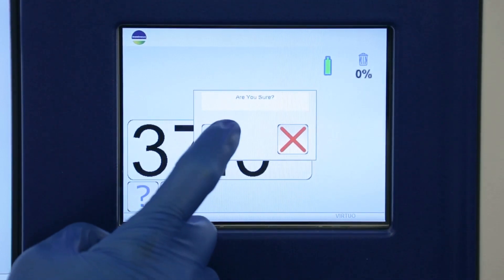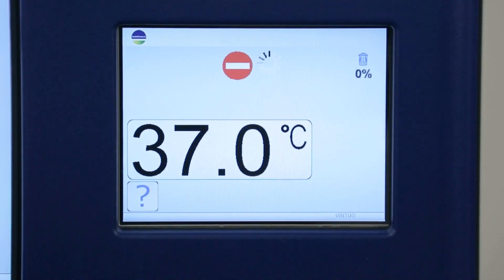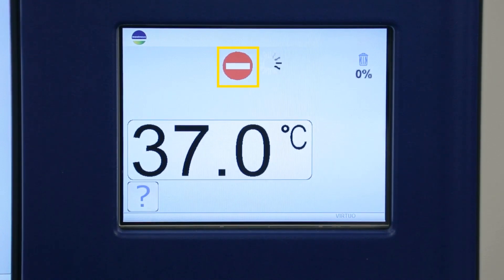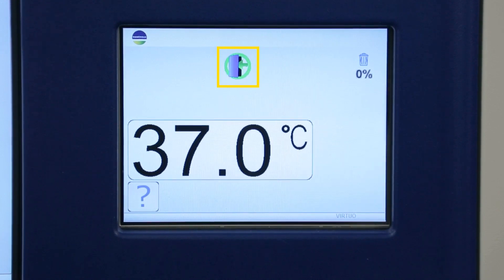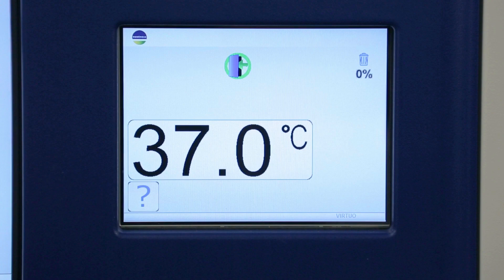Next, select the green check to confirm the request. A Do Not Enter icon will display as the robot moves into the ready position. The Entry Allowed icon will appear when the robot stops moving. It is now safe to open the instrument door.